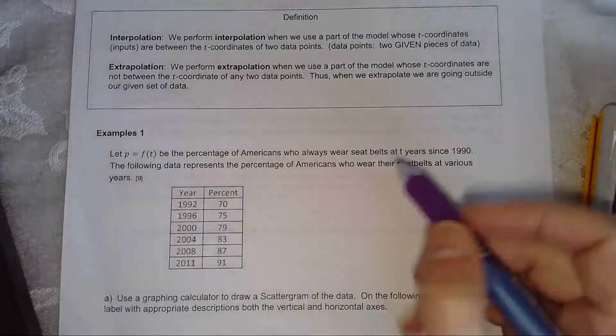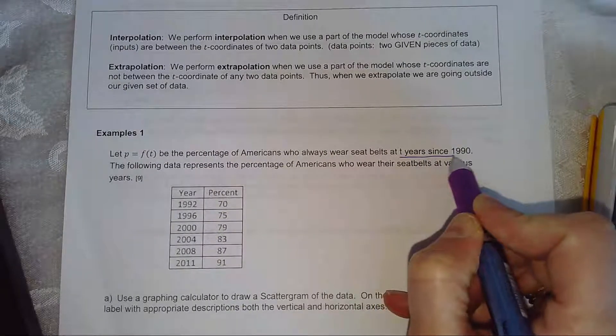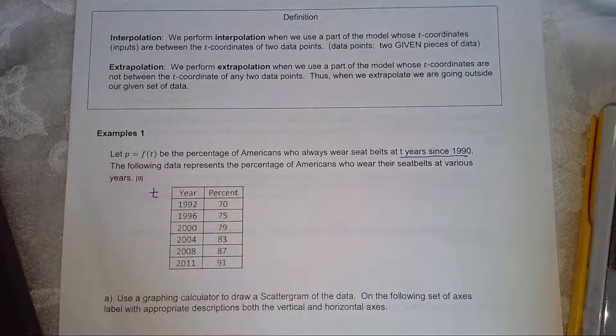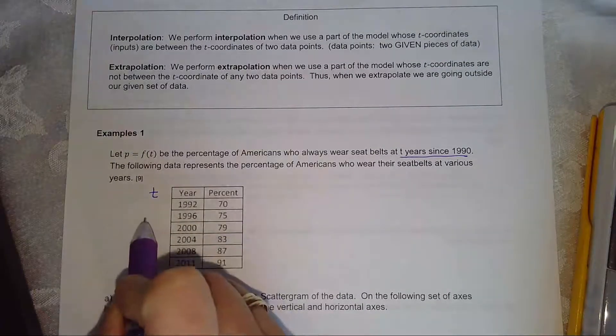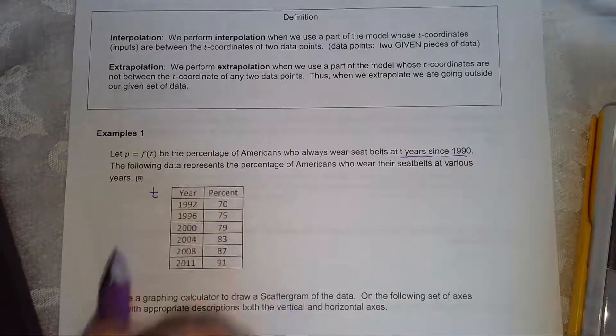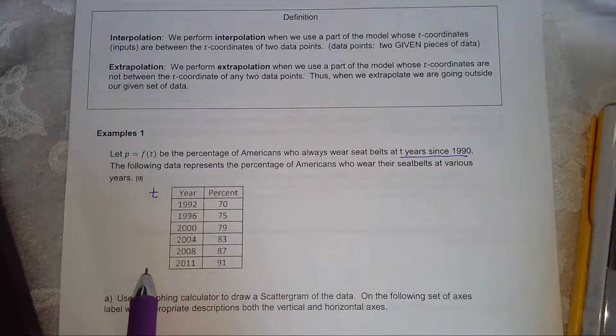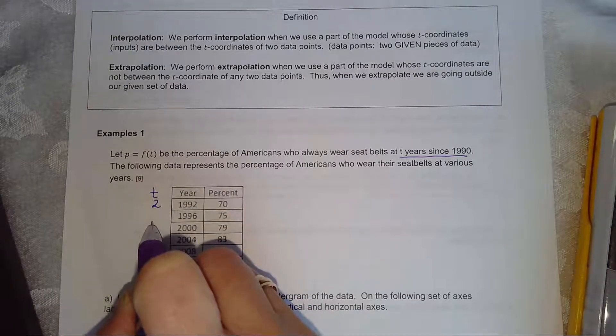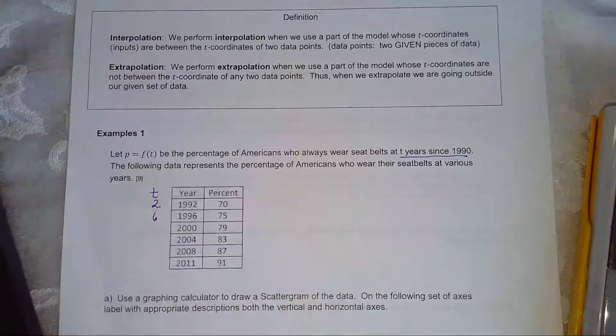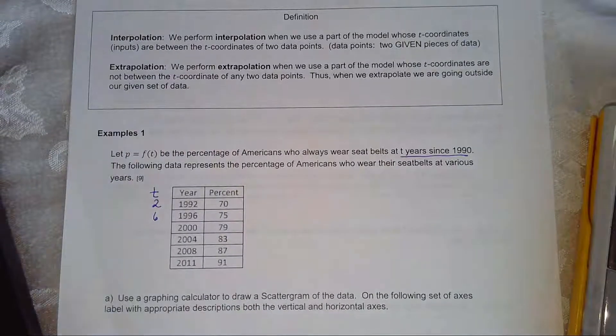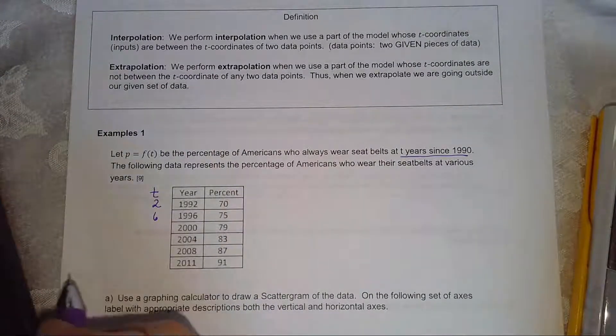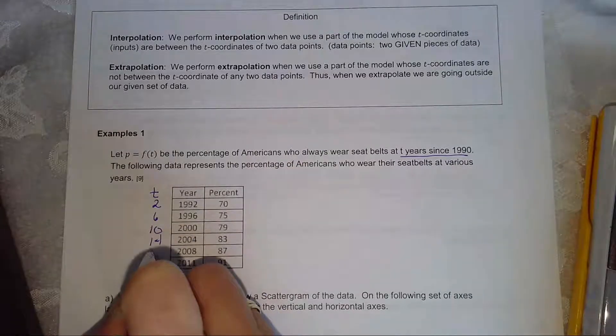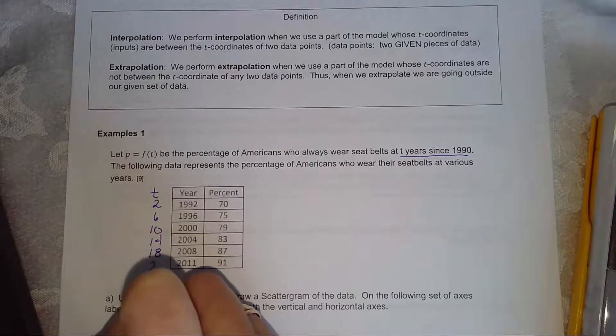Now the problem says we're looking at years since 1990, so you're going to make a t column because the t column is what we're going to enter into our calculator. So for a t year since 1990, you can pause the video and fill in these t values. I'm going to say 1992 will be a t value of 2, 1996 is a t value of 6, we have 10, 14, 18, and 21.